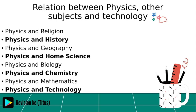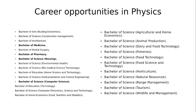Physics and home science: physics knowledge has been applied in the design and manufacture of domestic equipment such as pressure cookers and microwaves. Physics and chemistry: physics has helped in explaining forces within atoms and therefore atomic structure. Physics and biology: knowledge of lenses has helped in the making of the microscope, which has assisted in the study of the cell, the basic unit of life.